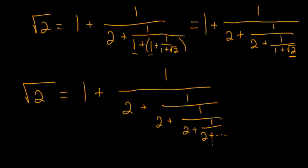It's important to note that if you have an infinitely long continued fraction expansion of a number, then you know that that number is irrational. And this makes sense, considering we already know that the square root of 2 is irrational.